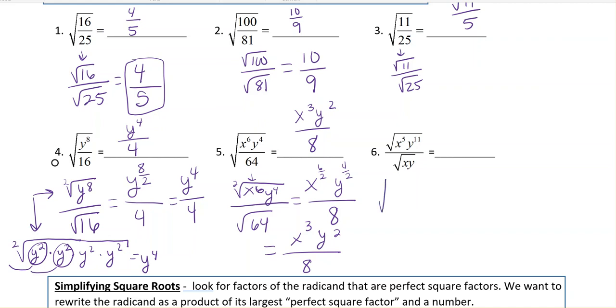I'm actually going to make it into one radical and have x to the 5th, y to the 11th over x, y. And if you remember those exponent rules, then you'll remember that when you have a fraction, you should subtract your exponents, which means I would get x to the 5 minus 1,